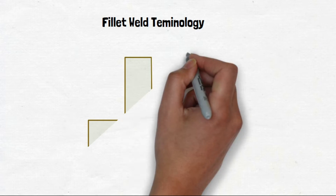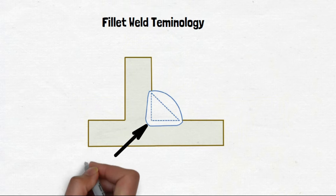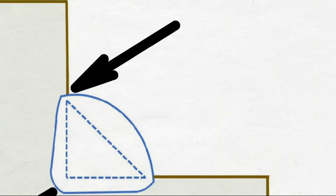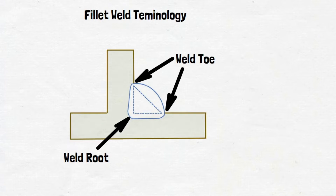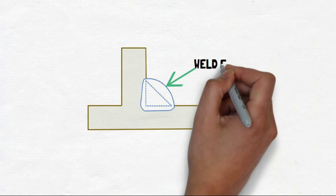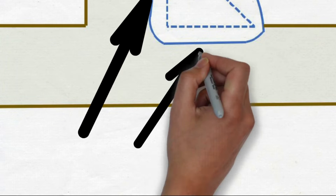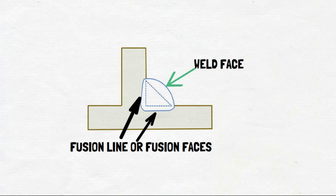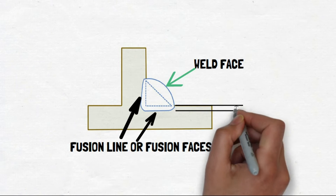Fillet weld terminology. A fillet weld has various parts. The center point joining both plates is called the root. Outer corners are called weld toe. The outer side is called weld face. This is called fusion lines or fusion faces. This is the depth of penetration.